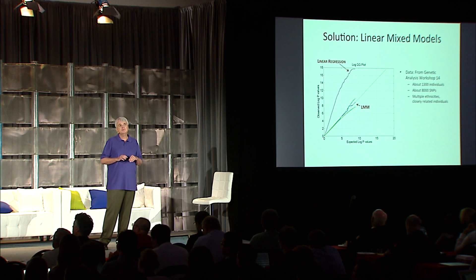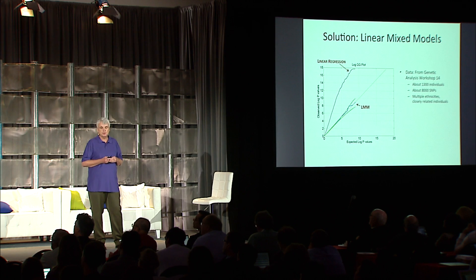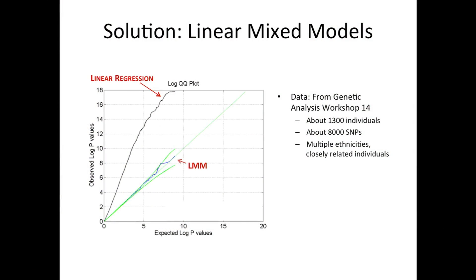The animal breeders, about four decades ago, figured this out and came up with a very nice solution called a linear mixed model. Linear mixed models very nicely correct for these sorts of confounding and other forms of confounding. Here's an example: this is a very messy data set with eight different ethnicities and closely related individuals. If you apply linear regression, you get lots and lots of false positives. If you apply the linear mixed model, you control very well for the type one error. The main point is that linear mixed models correct for confounding very well.